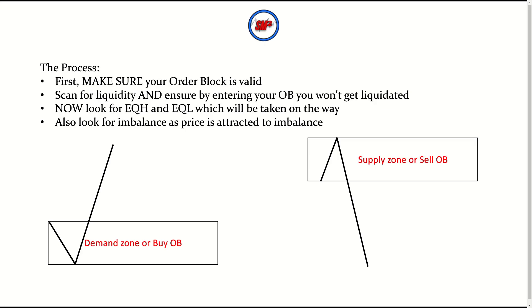Now the process: first, make sure your order block is valid — that's the first thing. Secondly, once that's done, scan for liquidity and ensure that by entering at your order block you will not get liquidated. Let me show you what that looks like. So let's say I've got a demand zone, or buy order block, and I want to ensure I'm not getting liquidated when entering.